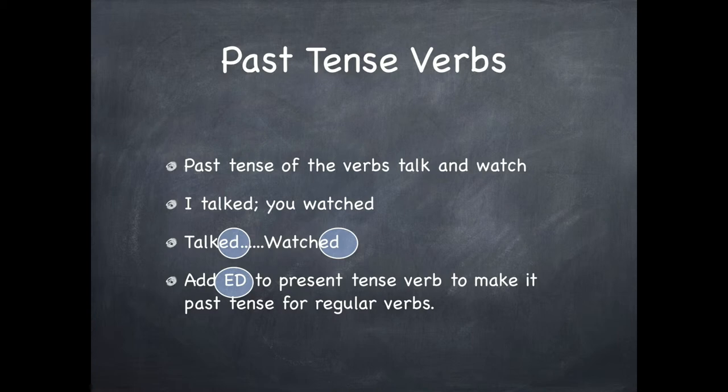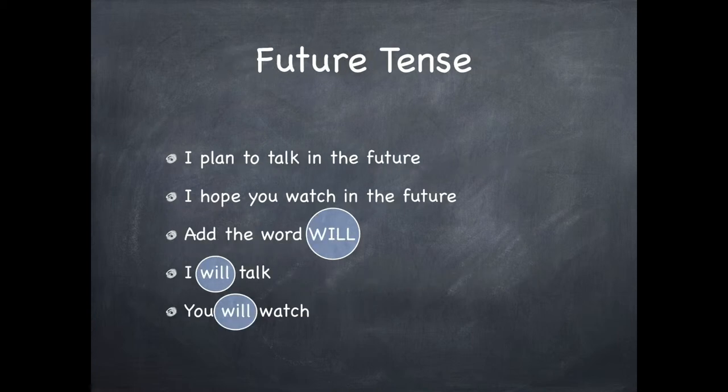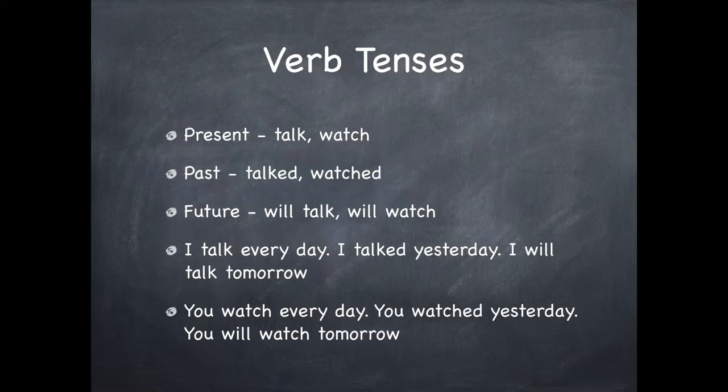Easy, right? Well, just add ed. Now, what about actions that will take place in the future? Well, I can guarantee that I'll still talk in the future and I hope you'll still watch. Now to form the future tense, you have to add a whole word to the basic verb. I will talk, you will watch. So the present tense verbs talk and watch are changed to the past by adding ed on the end of the word and changed to the future by adding the word will right before the present tense verbs.